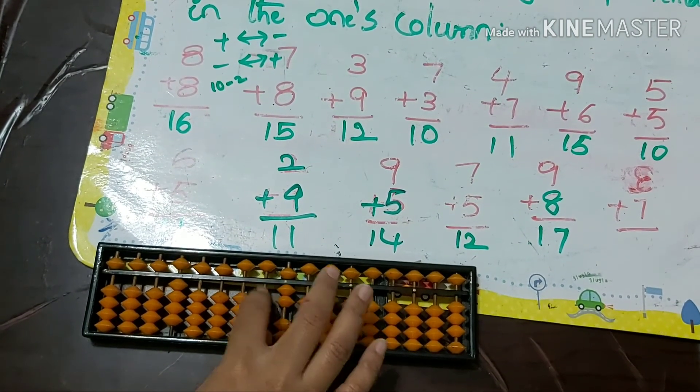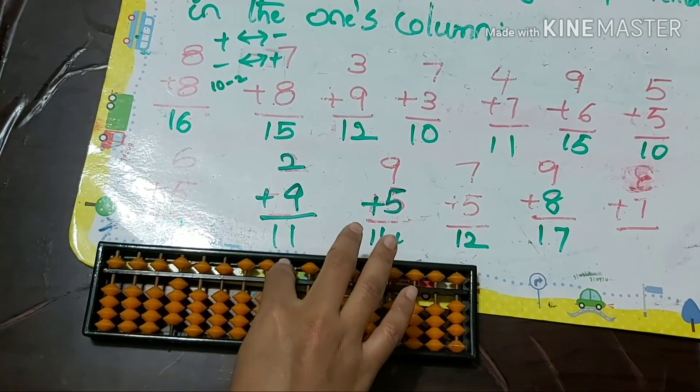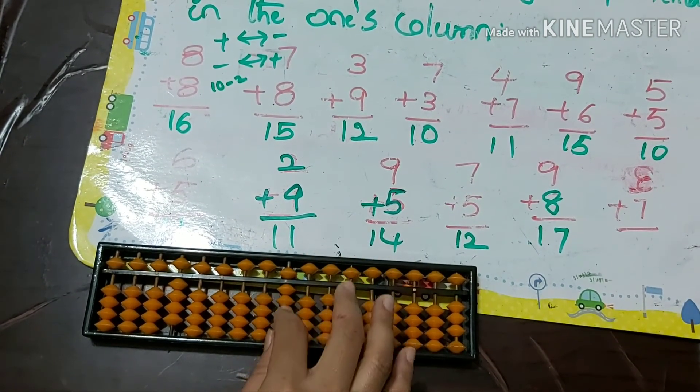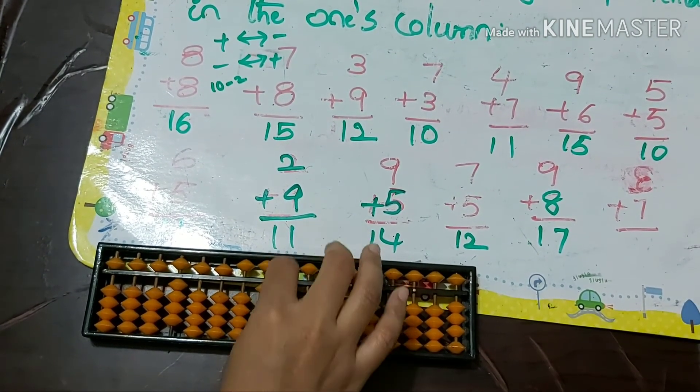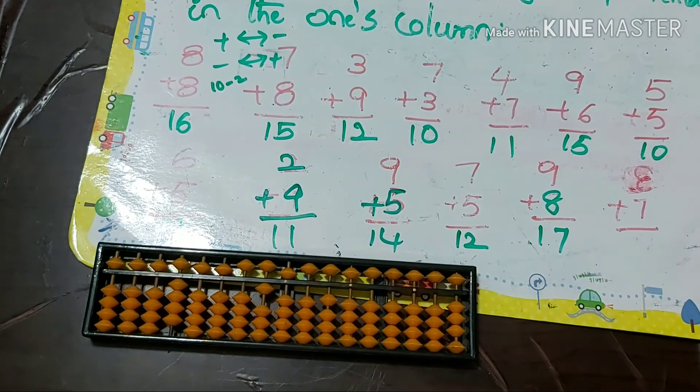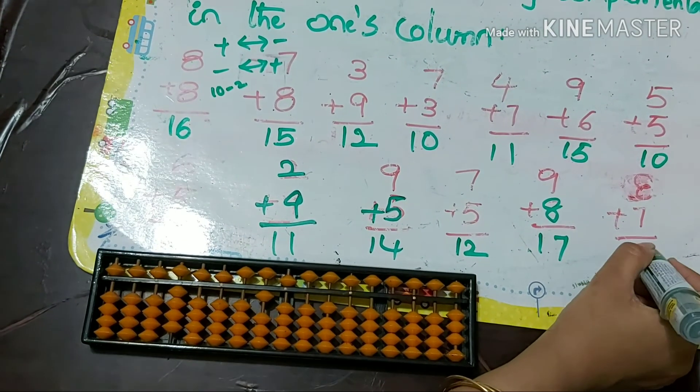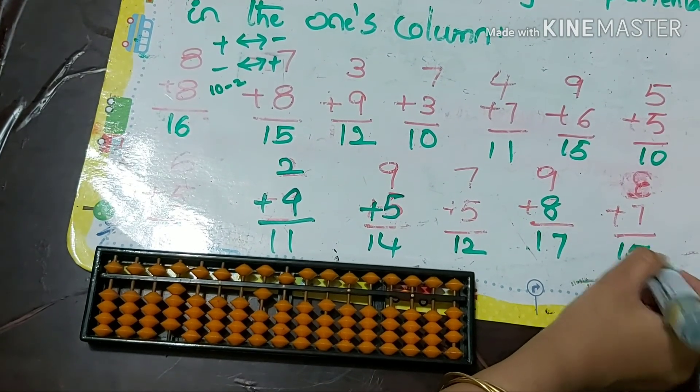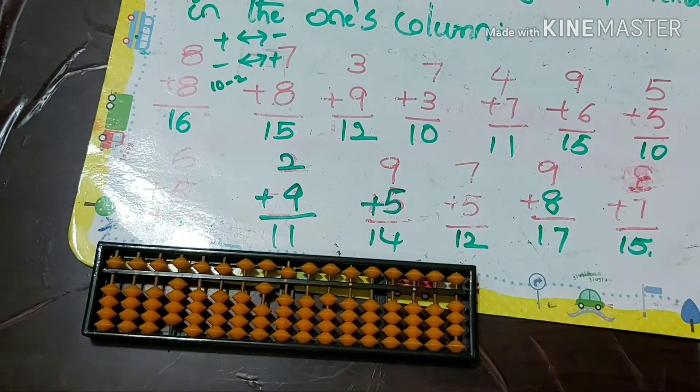8 plus 7: formula is +10 minus 3, so the answer is 15. Hope you understand all the problems.